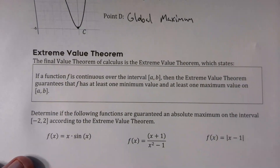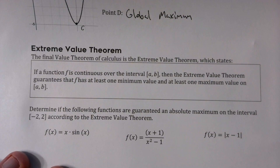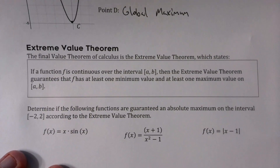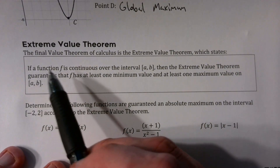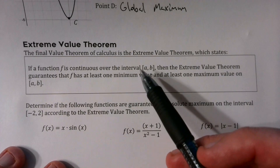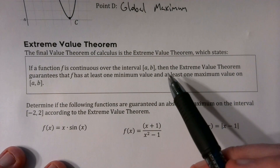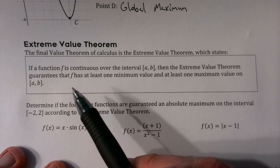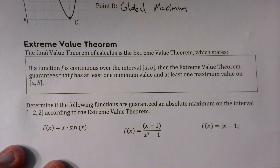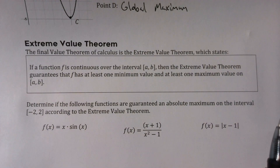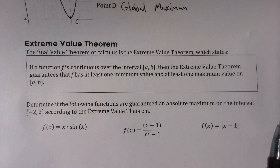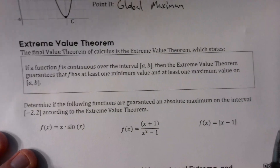Our last value theorem of calculus is called the extreme value theorem. It's a very simple one: if a function f is continuous on the closed interval [a, b], then the extreme value theorem guarantees that f has at least one minimum value and at least one maximum value on the interval. So if it's continuous on an interval, it has to have a low point and a high point.